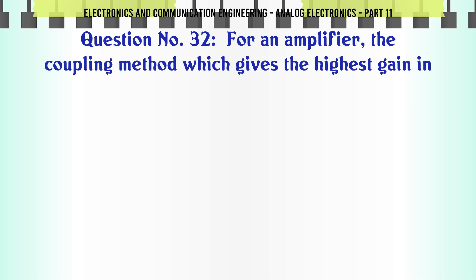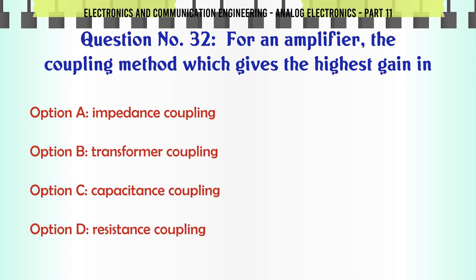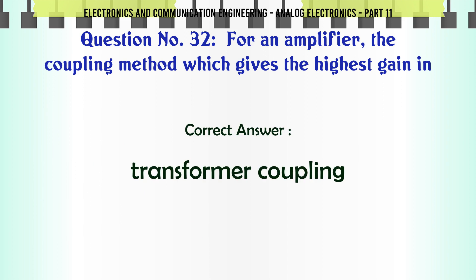For an amplifier, the coupling method which gives the highest gain is. A. Impedance coupling. B. Transformer coupling. C. Capacitance coupling. D. Resistance coupling. The correct answer is: Transformer coupling.